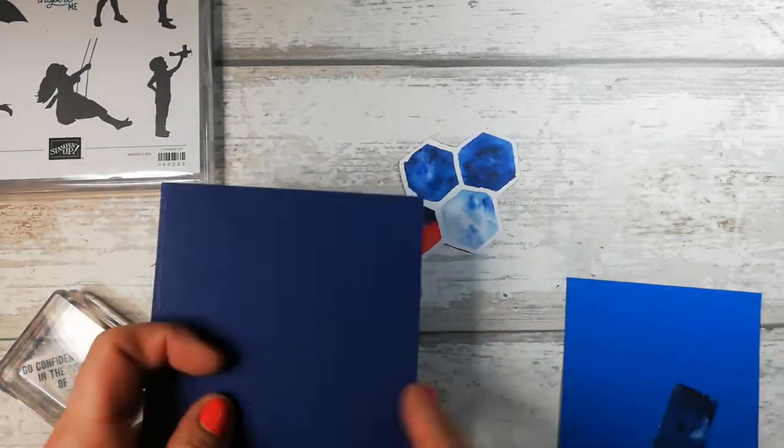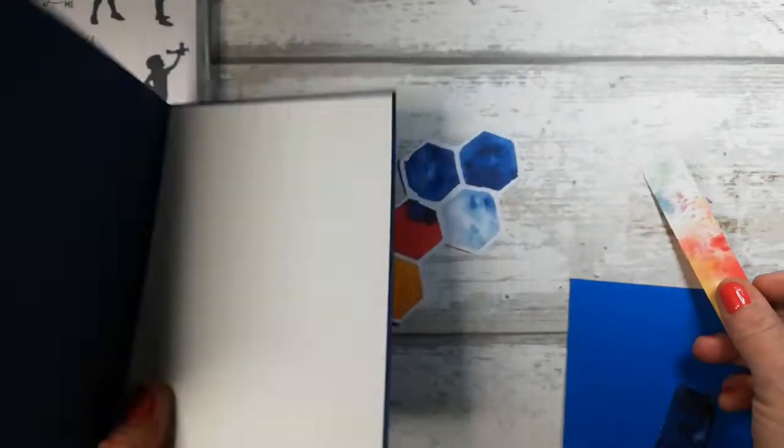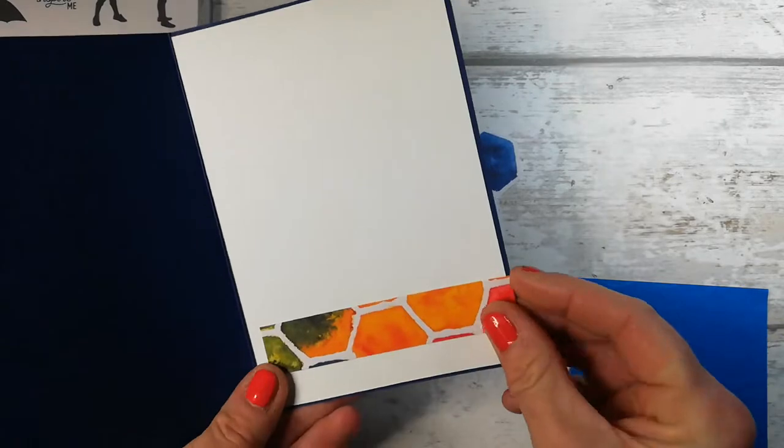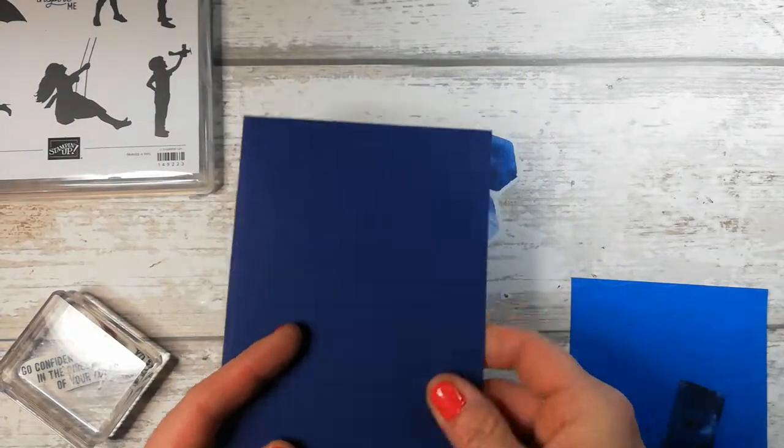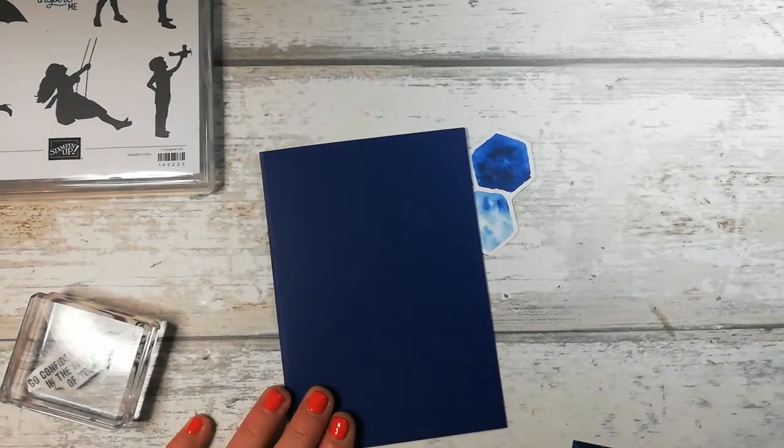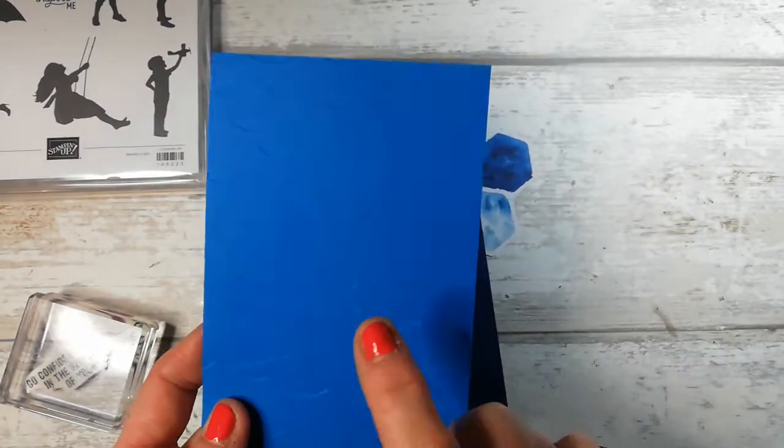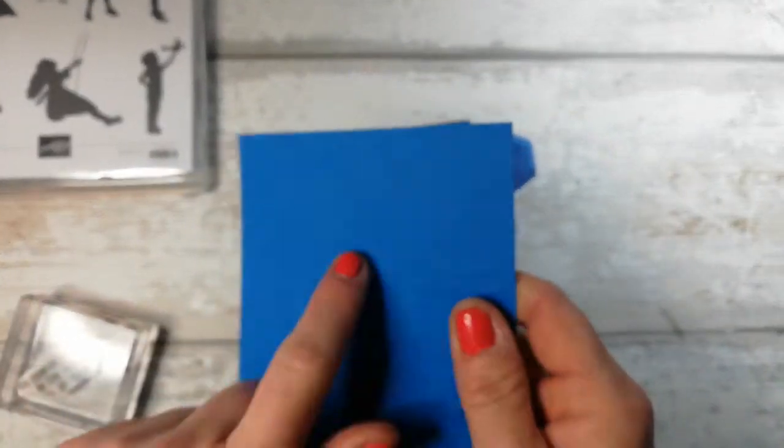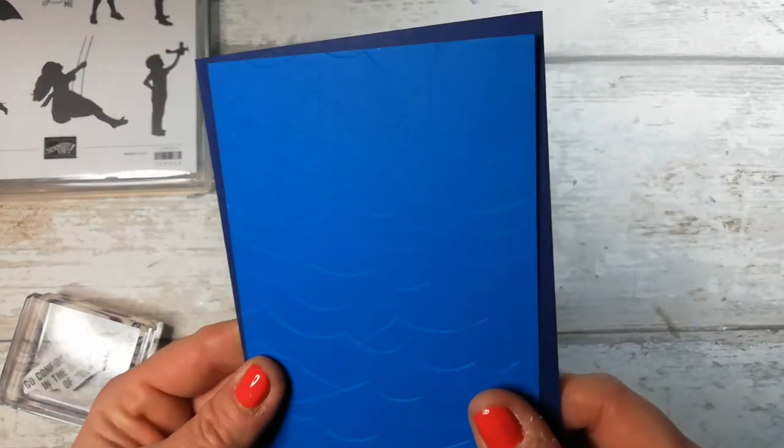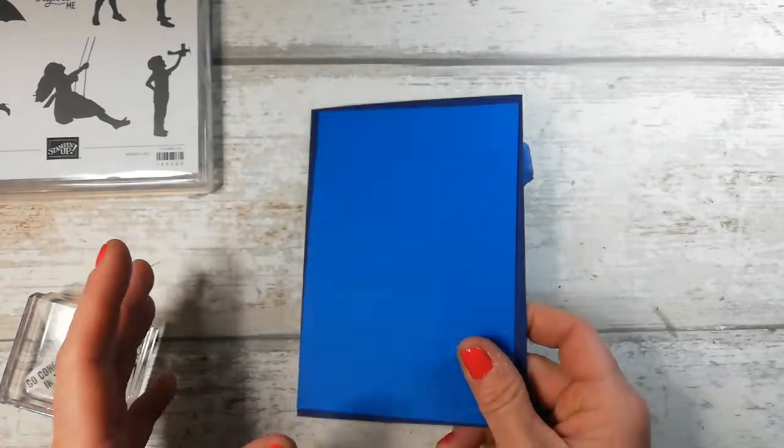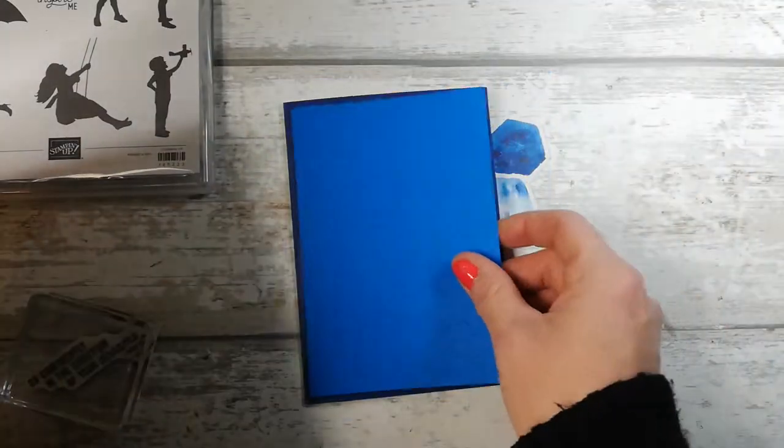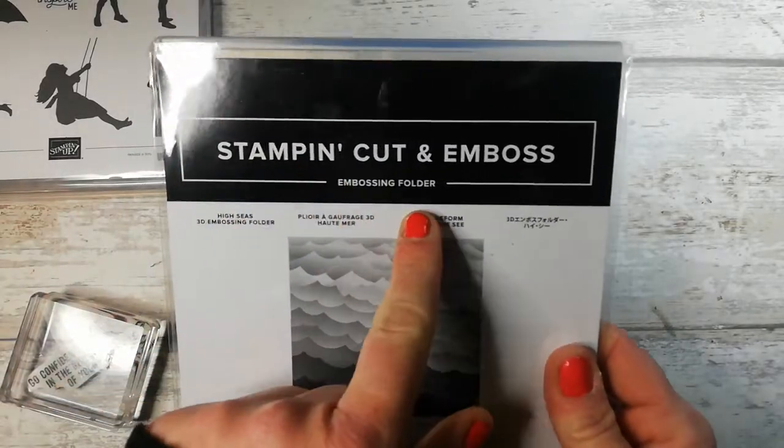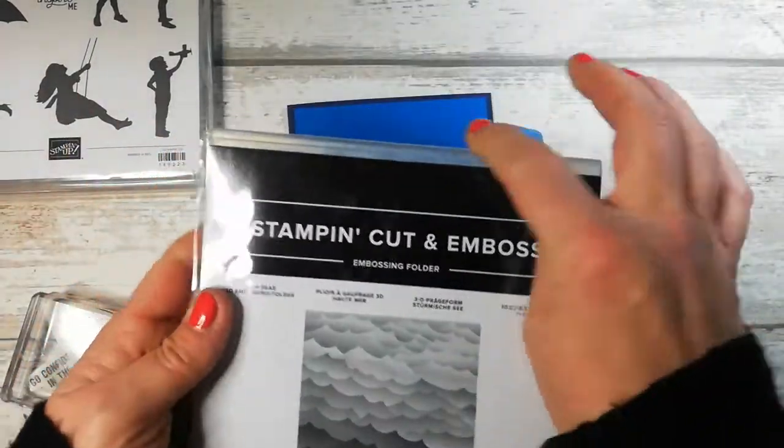So what I've got is I've got a Knight of Navy card with a Wisp of White insert. I've got a little scrap piece of the DSP that I'm going to line on the inside as well. So I'll keep that in there for the moment. I have Pacific Point cardstock, a beautiful, beautiful blue. So now what I've done is I thought I want to emboss it and I want to use an embossing folder that I don't use a lot even though I bought it for the purpose of using it.